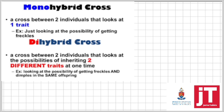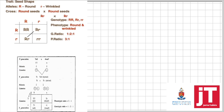Now let's look at genetics. A monohybrid cross is a cross between two individuals that involves one trait or one characteristic. A dihybrid cross is a cross between two individuals with two different traits or two different characteristics. Here is how you set up a monohybrid cross: you must have your P and F1, your phenotype, your genotype, your meiosis, your gametes, your random fertilization, then your Punnett square — I would prefer you use a Punnett square — then the phenotype and genotype of the offspring.